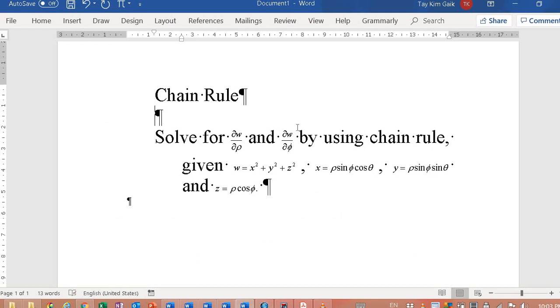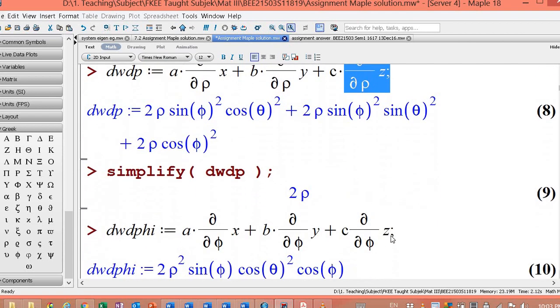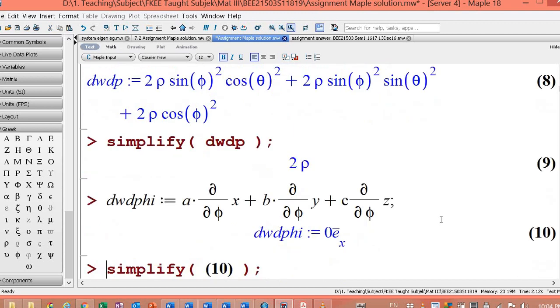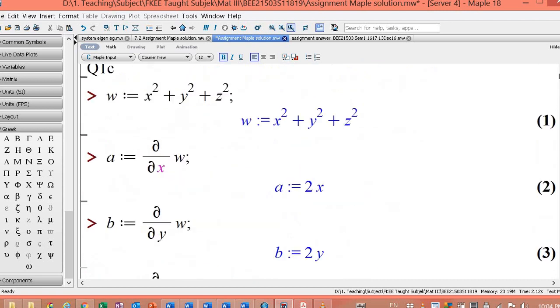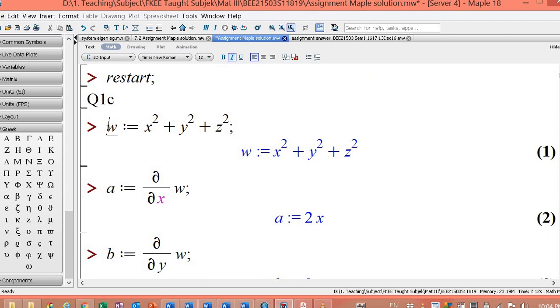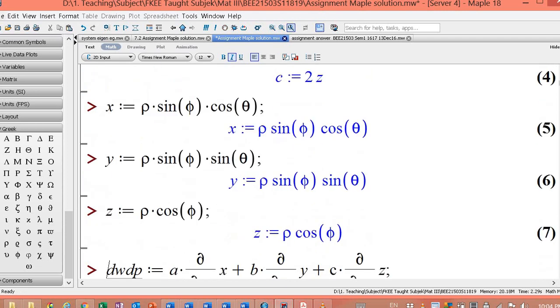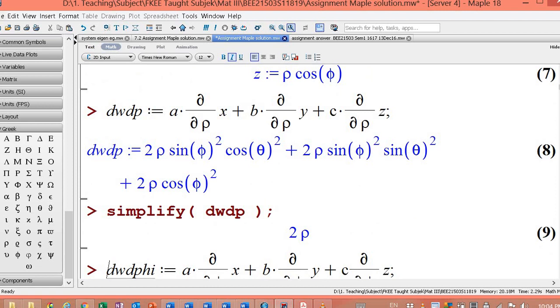And the second one, you want to find del w del phi. Del w del phi will be a multiply del x del phi plus b multiply del y del phi plus c multiply del z del phi.